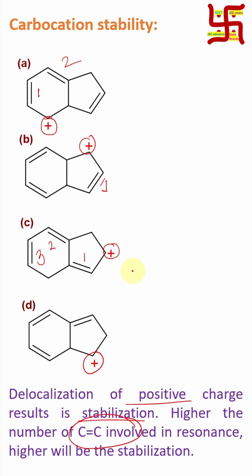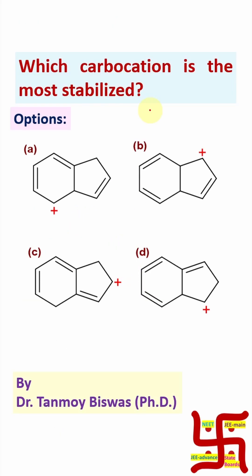So in which case is the stabilization maximum? Where the maximum number of double bonds are involved in resonance or delocalization with this positive charge. So option C is the right answer.